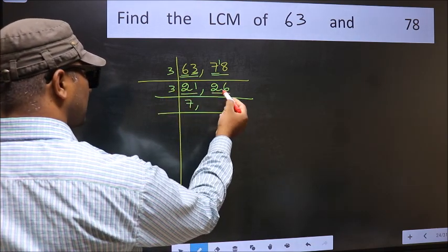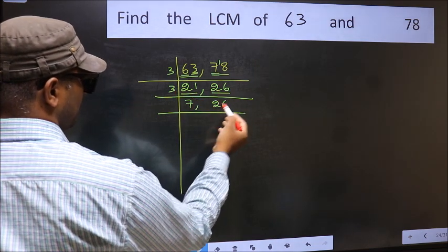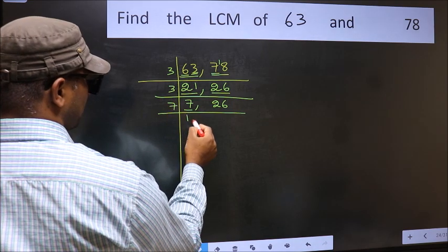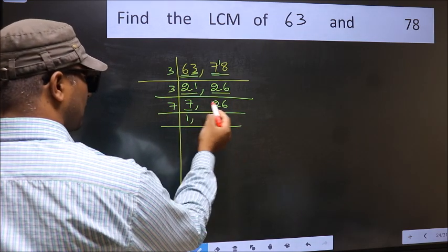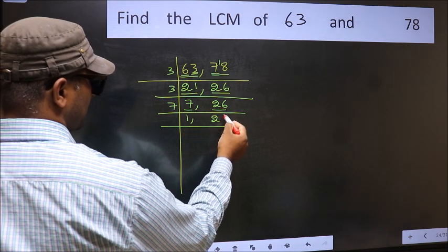The other number is 26. Not divisible by 3, so you write it down as it is. Now here we have 7. 7 is a prime number, so 7 times 1 is 7. The other number 26. Not divisible by 7, so you write it down as it is.